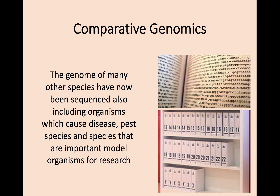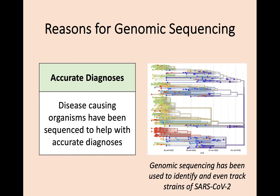We've moved forward with this by sequencing the genome of other organisms, and we're going to have a quick look at three main uses for this. The first, and a fairly topical use at the moment, is using genomics for an accurate diagnosis. If we sequence the genome of a disease-causing organism, say for example a virus, then we can diagnose that condition pretty quickly and we also know more about how that organism develops and operates. We can even use this to track the spread of viruses and what mutations are taking place by comparing their genomic sequences.